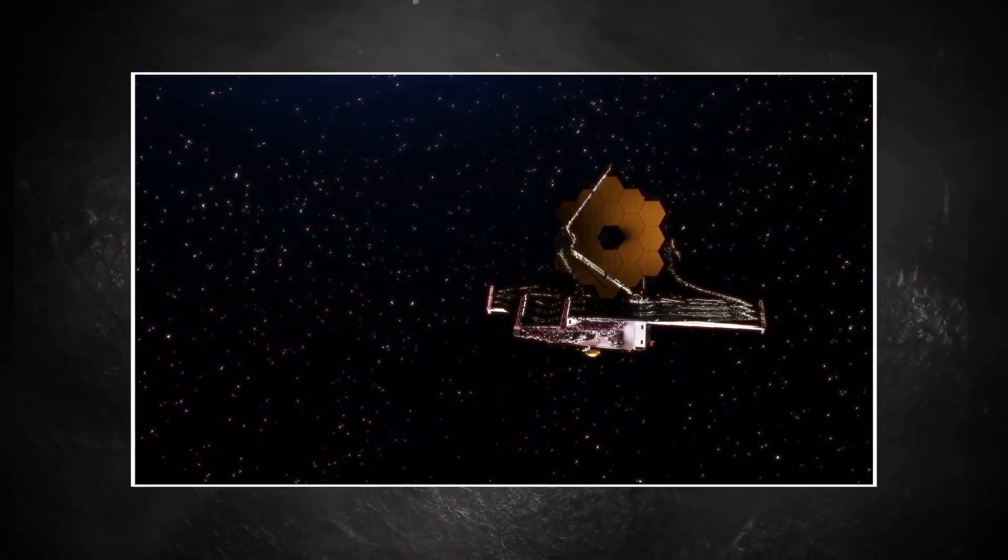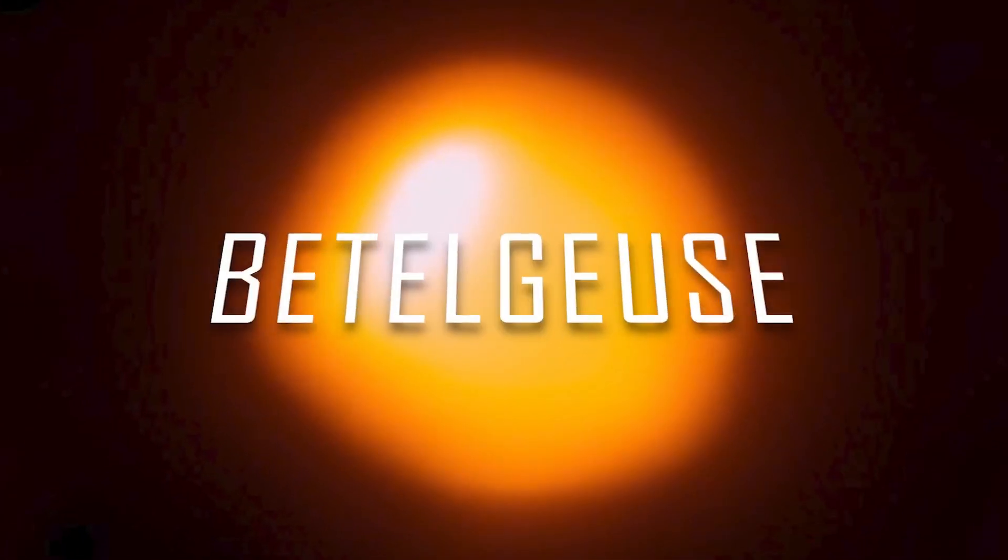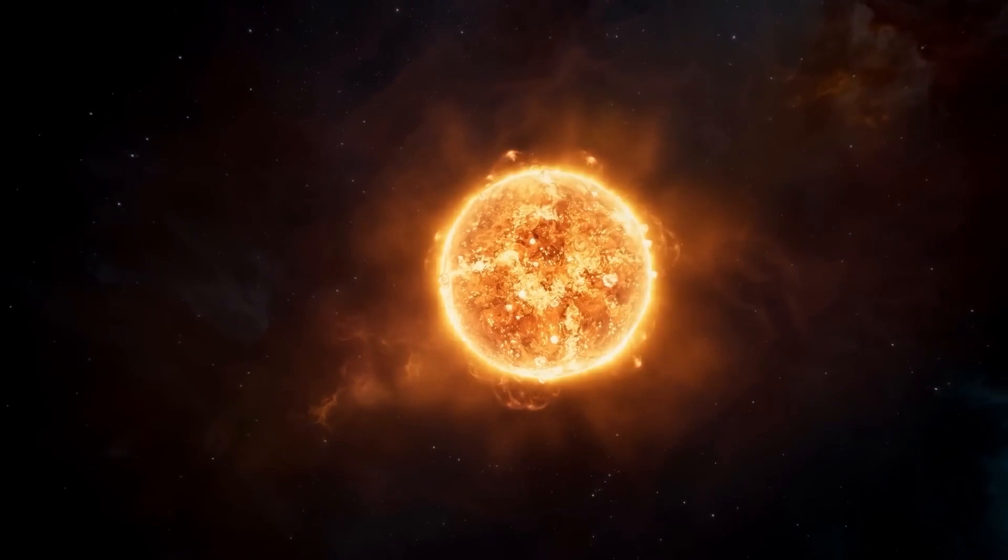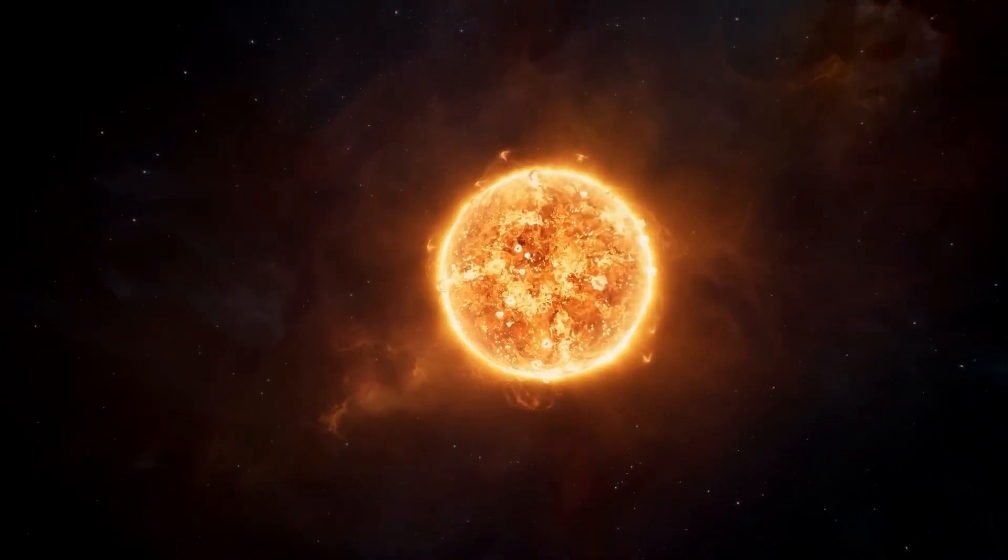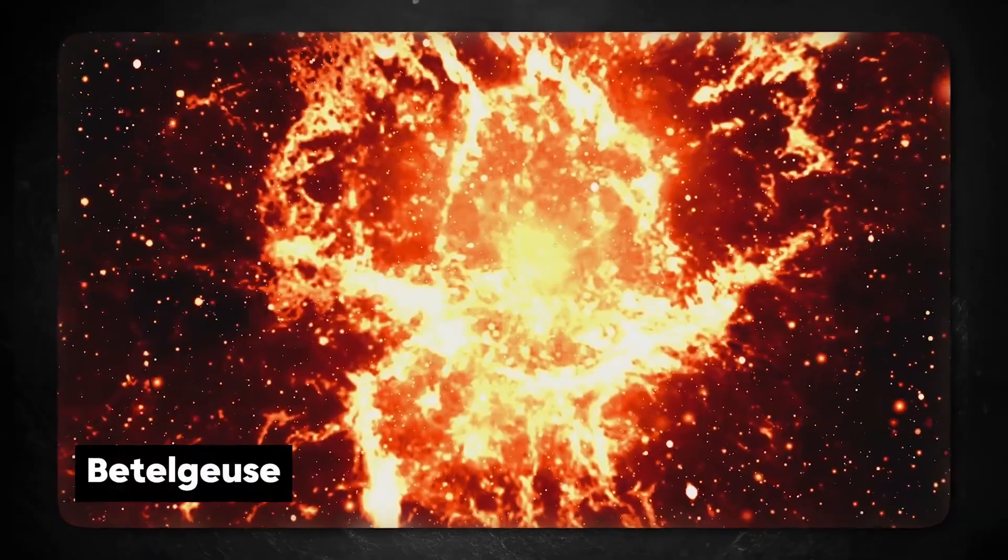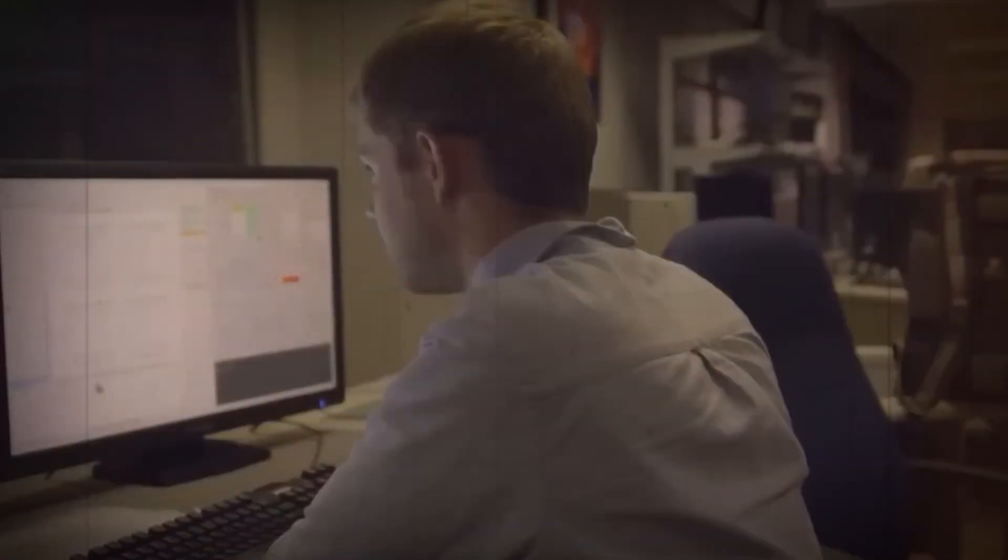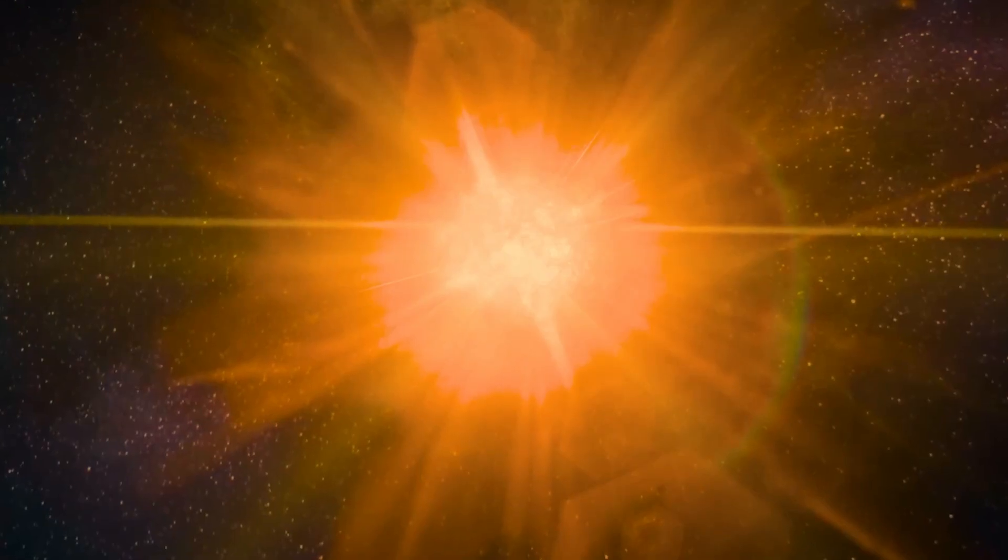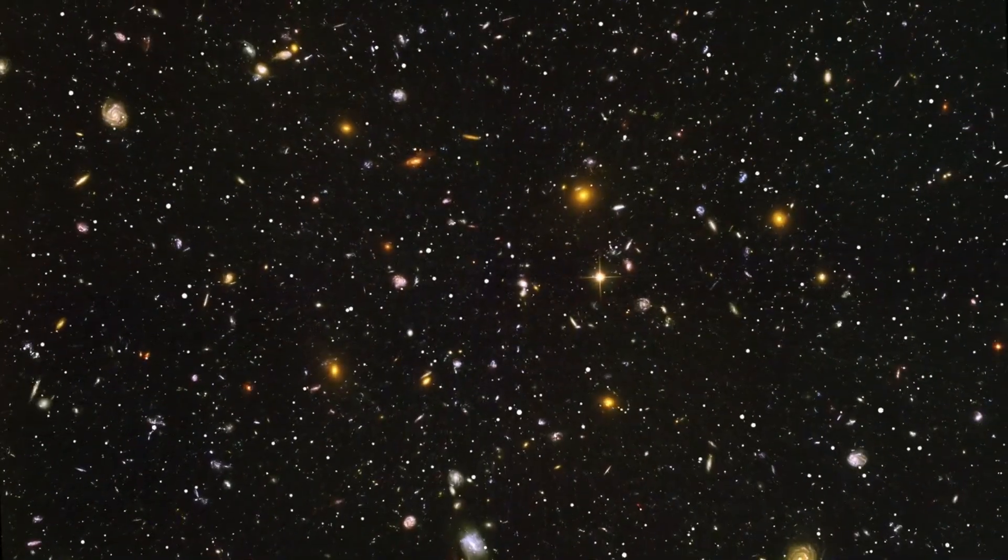We all know that it is a strong object that sends out a lot of energy into space. But not long ago, the James Webb Space Telescope found Betelgeuse, a star that is even more beautiful than the sun. Do you want to learn more about Betelgeuse? Watch this whole video to find out everything you need to know about this strange object in space.